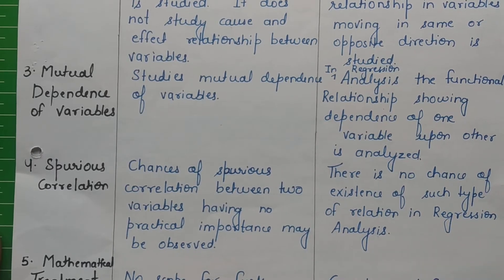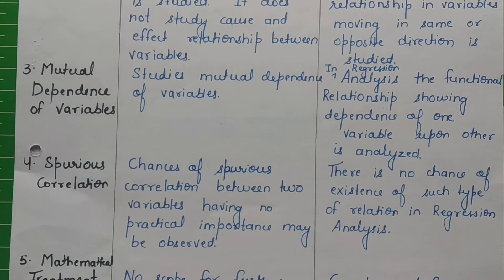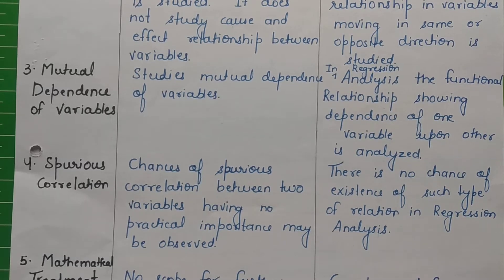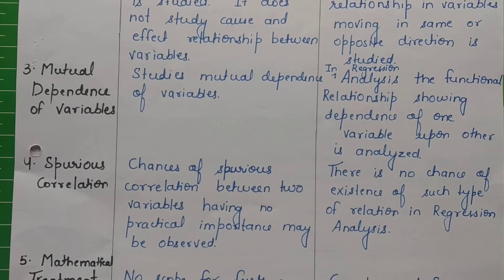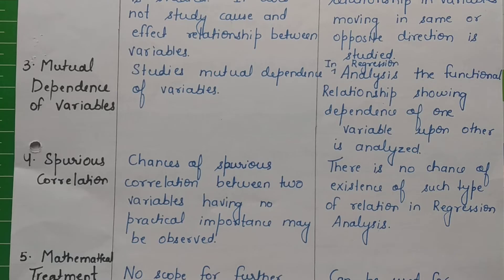But there is no such chance of the existence of spurious correlation in regression analysis, because in regression we use the line of best fit. We use deviations — our estimated values deviating from given values. We use least squares to minimize the line of best fit. We use two regression equations where one variable is dependent and one is independent. So there are no chances here of such a meaningless relationship.